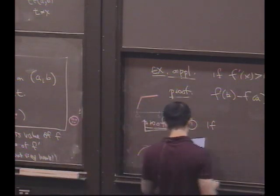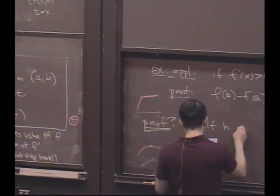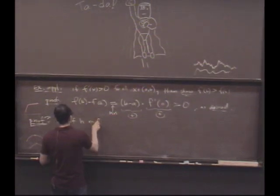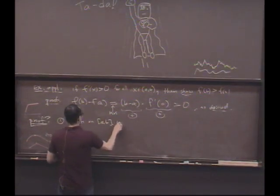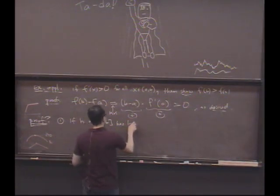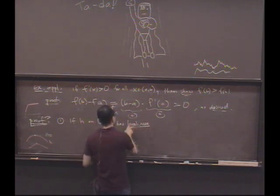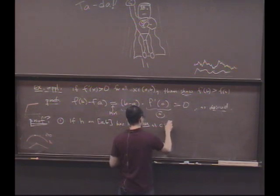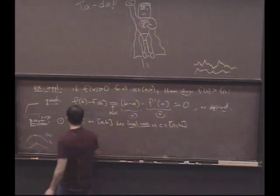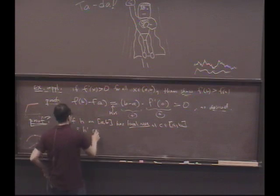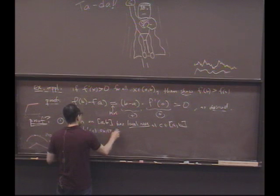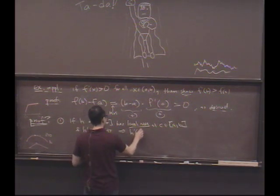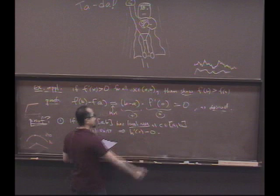So let's write this down as you think about it. If h on [a, b] has a local max at some point c inside closed [a, b], and h prime exists, h prime of c exists, then I claim h prime of c must be zero. That's my claim.